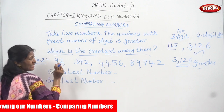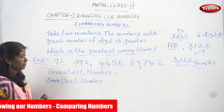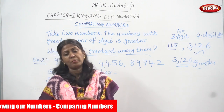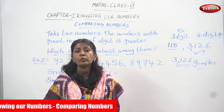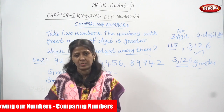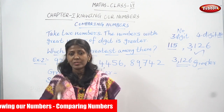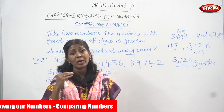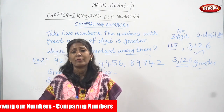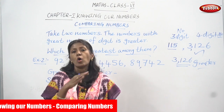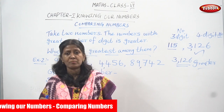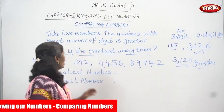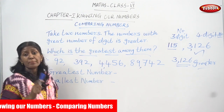You have to find out which is the greatest and also which is the smallest number. To find the greatest number, you have to consider the number of digits. You must count the number of digits first. If all numbers have the same number of digits, then you can go according to the place value.